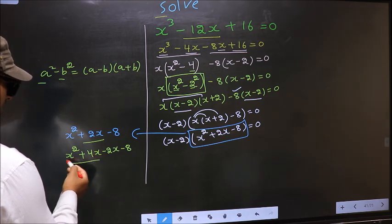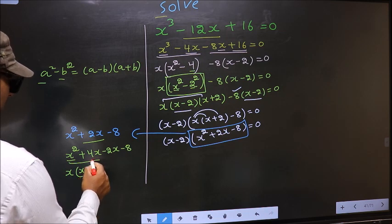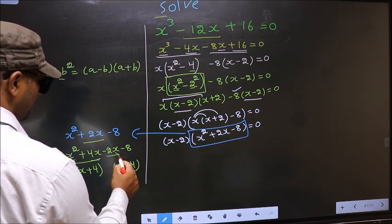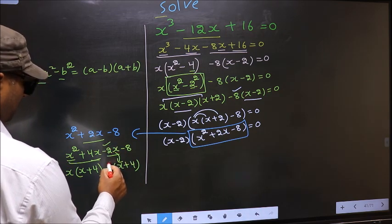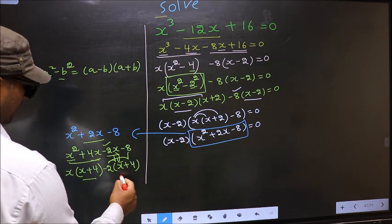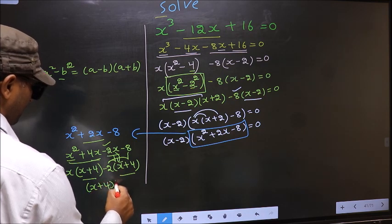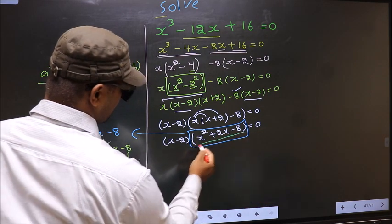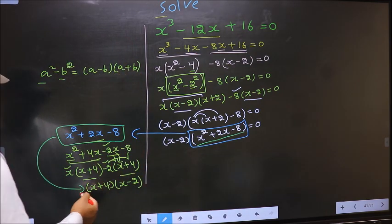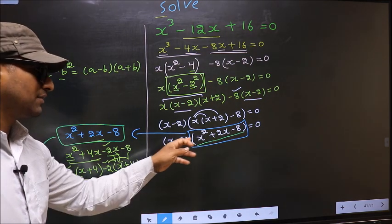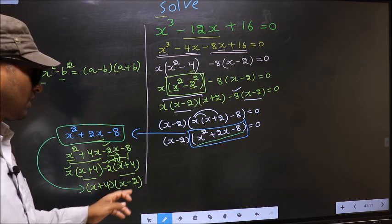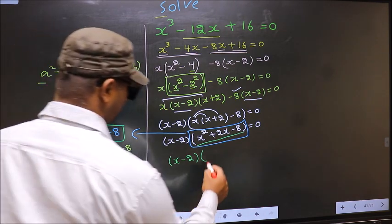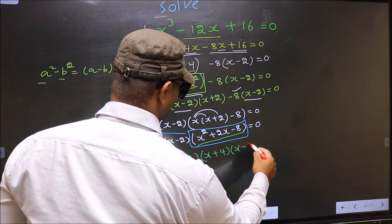Now from these two terms, what can be taken out common is x. So here you get x plus 4. From the next two terms, outside you get minus 2. Now take out x plus 4 common — so here you have x minus 2 times x plus 4. In place of this quadratic I now write this. So the full equation becomes x minus 2 times x plus 4 times x minus 2 equal to 0.